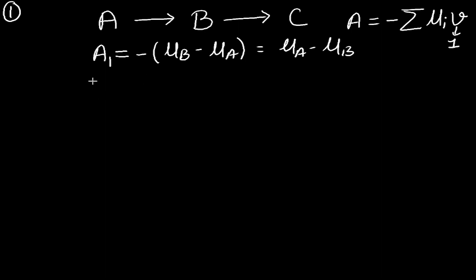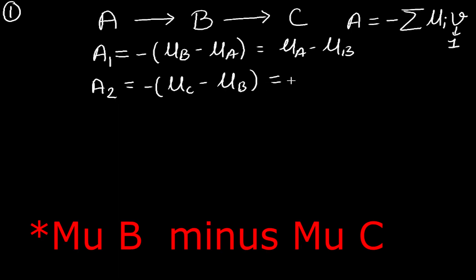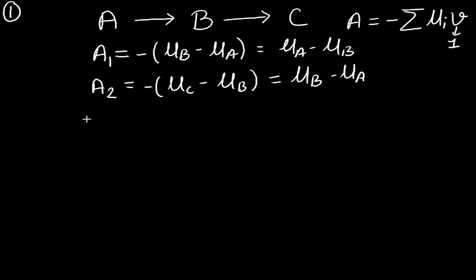Similarly, the affinity for the second reaction, A2, for the conversion of B to C is: A2 = −(μC − μB) = μB − μC. These are the affinities for the first and second reactions respectively.